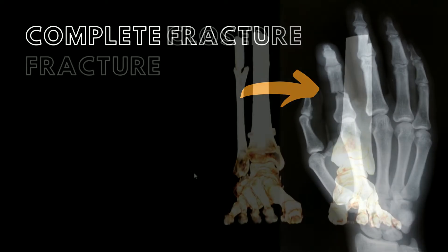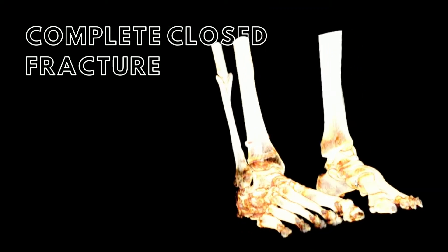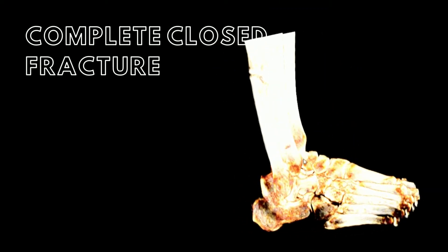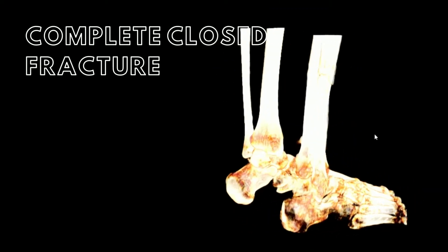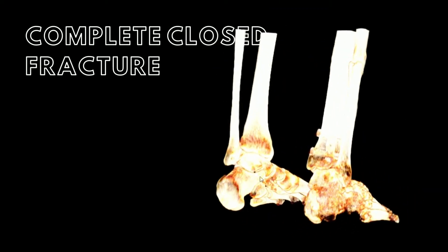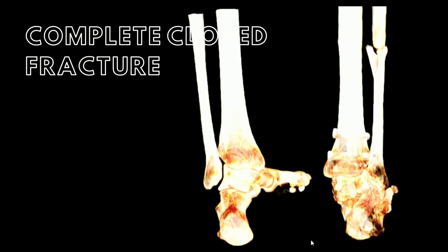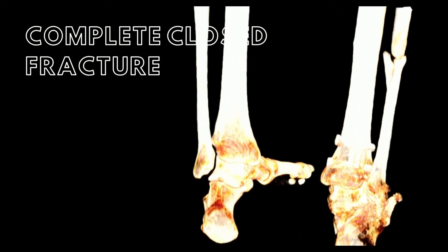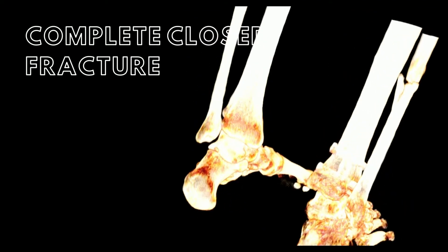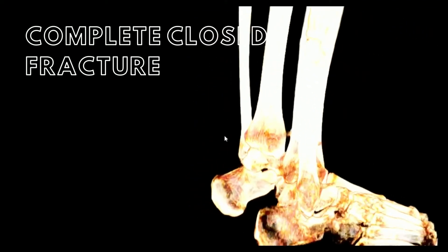In this BVF, you can see a complete closed fracture example. Typically, breaks occur in the shaft of a long bone, because there is not as much trabecular or spongy bone to handle stress.